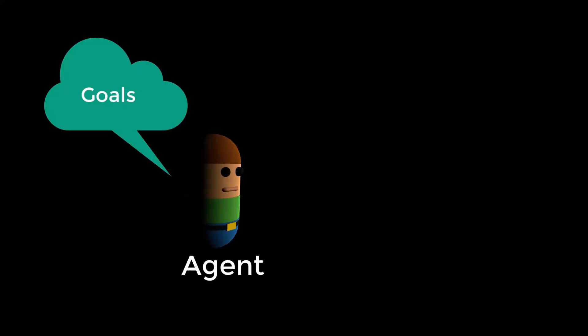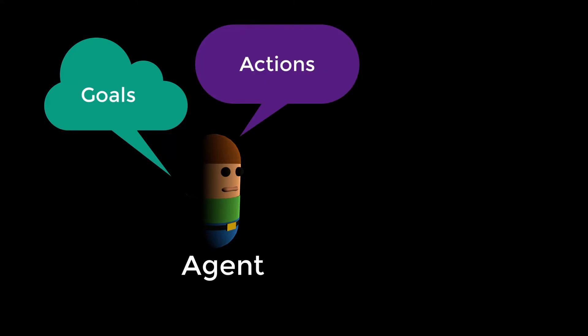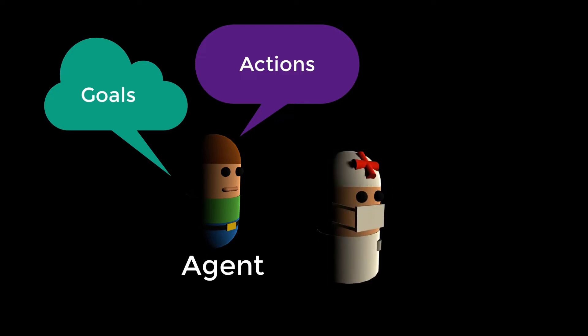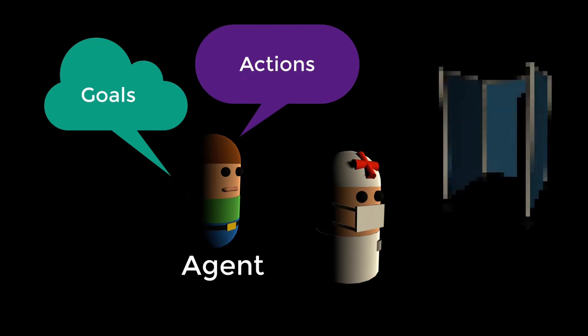Basically it will work like this. We have an agent. The agent has a number of goals. These goals drive its sequence of actions. Some actions are only possible after other actions have been completed. But the environment or game world and other agents also play a part. For example, some actions might not be possible without the help of another agent, and other actions might not be possible without the use of a resource.